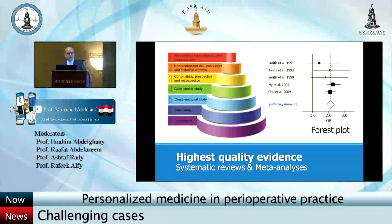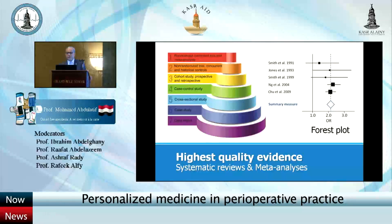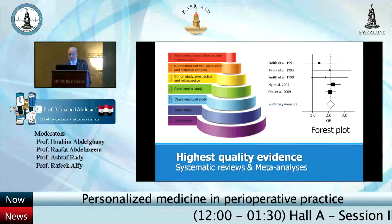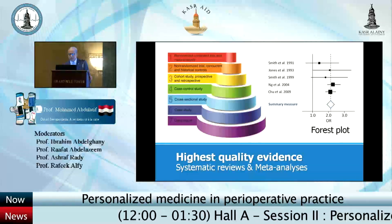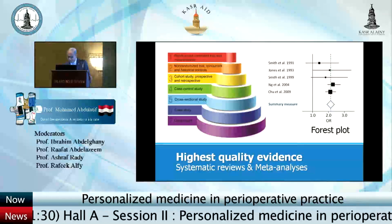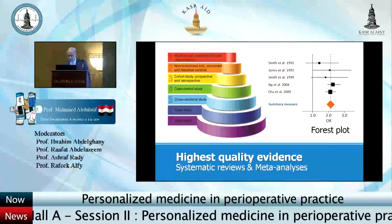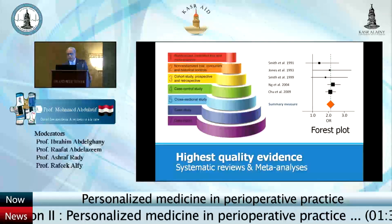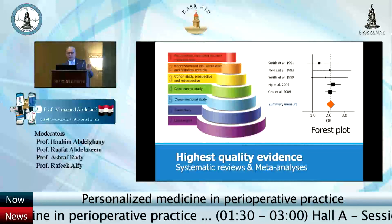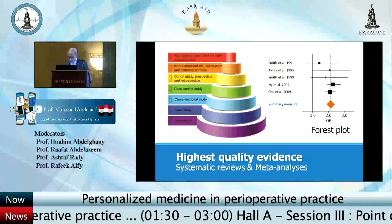I'll provide the highest quality possible evidence from systematic reviews and meta-analyses. As you know, systematic reviews and meta-analyses are usually summarized in a forest plot or odds ratio chart. The different studies are shown, there is a line of no difference, and the summary comes in a diamond. Please look for the diamond in relation to the line of no difference.